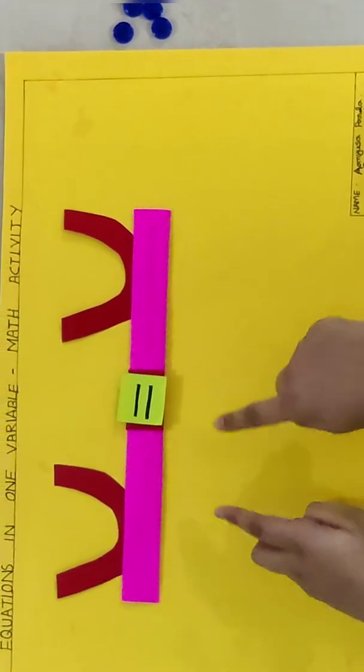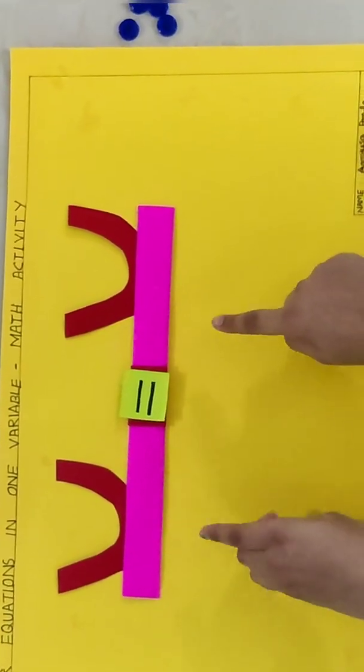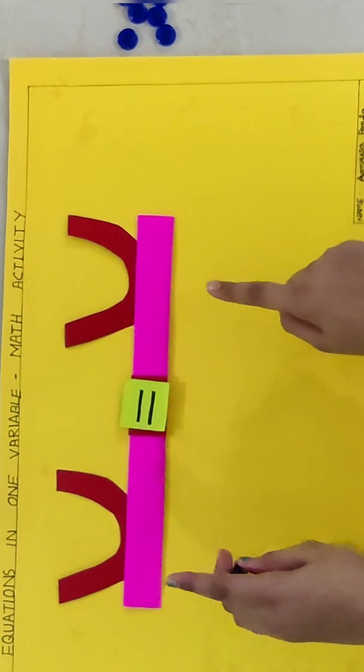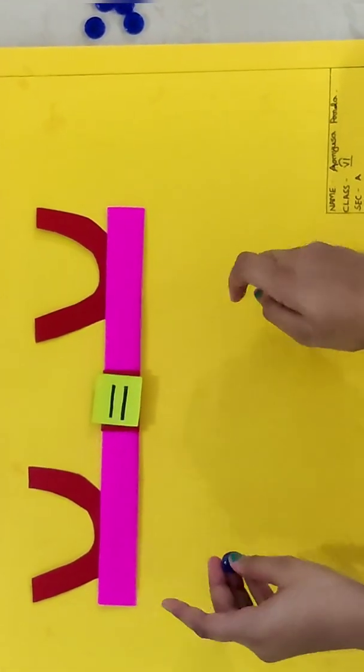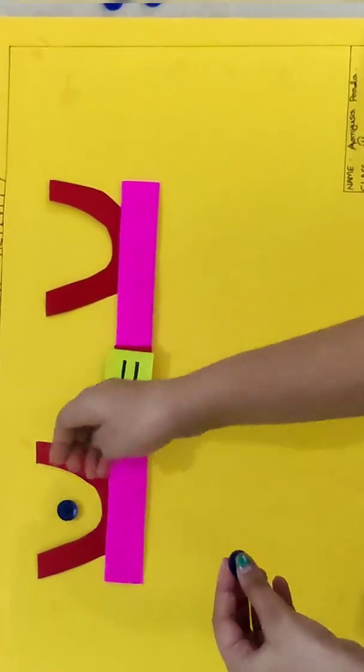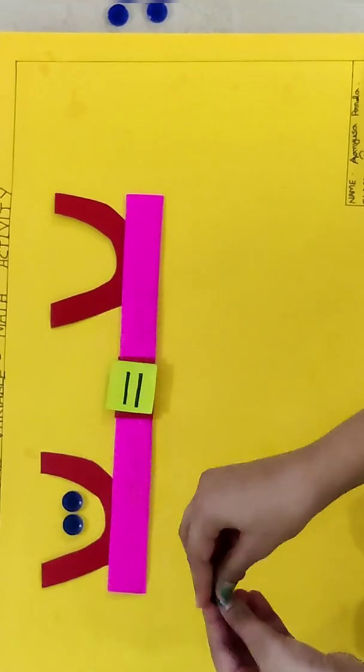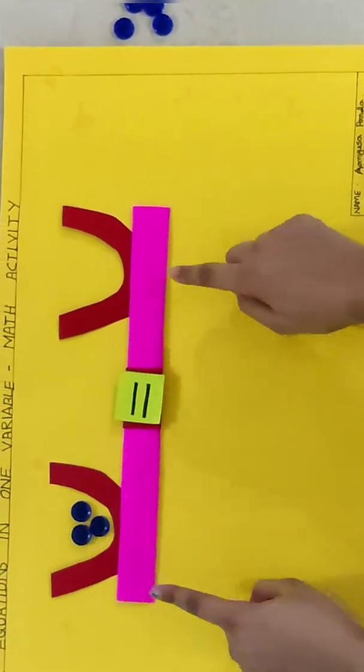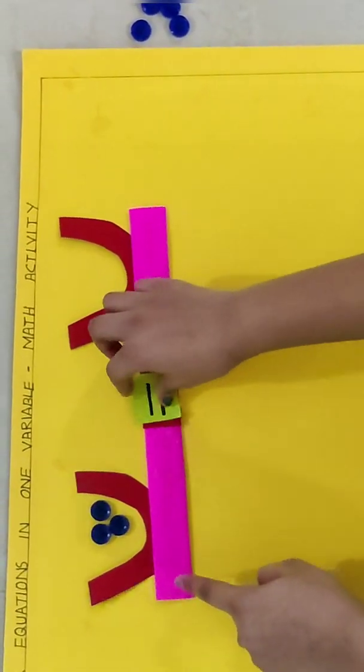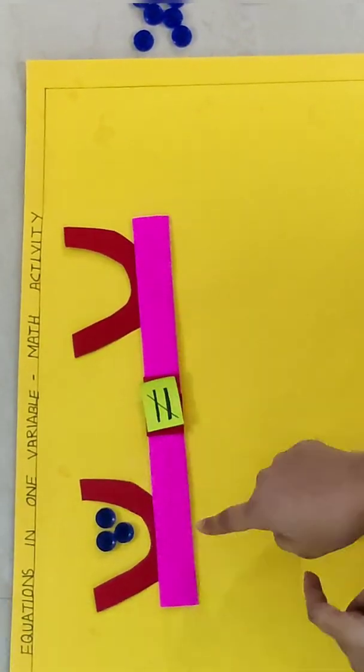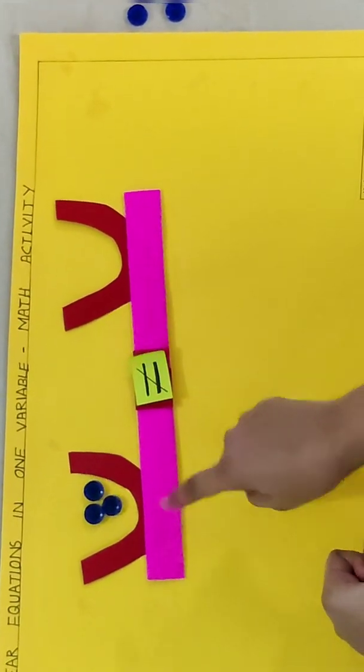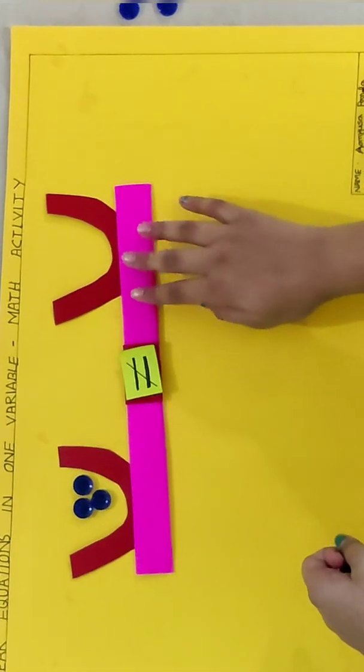So this is a balanced scale and this is equal because both sides don't contain anything. And now I am going to add 3 weights on one side and it would be not equal as there are 3 beads in one side and there are no beads in the other side.